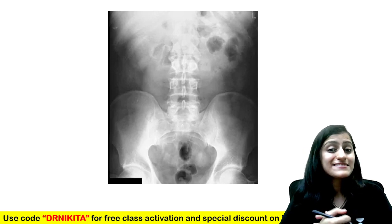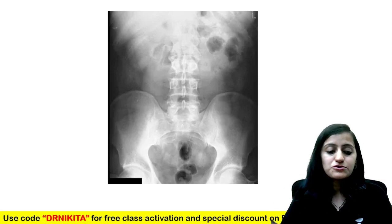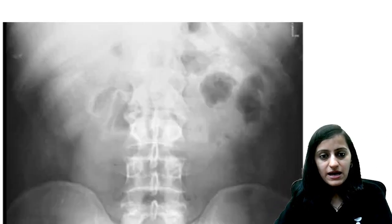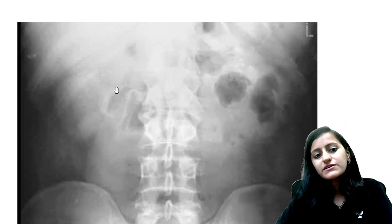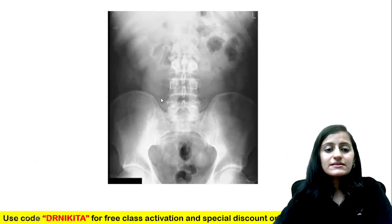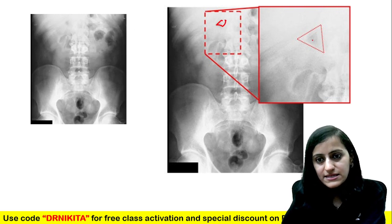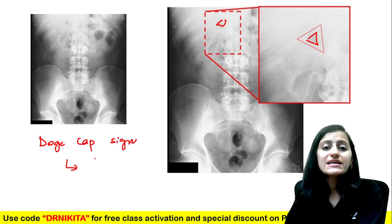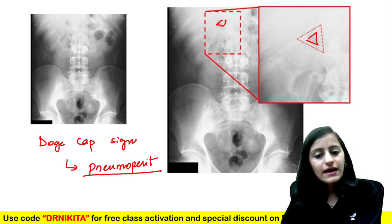The next image is a bit difficult but very important. Zooming in on the right side, there is a triangle-shaped collection of air between the liver and the kidney — in Morrison's pouch. This air in Morrison's pouch is called the doge cap sign, which is basically free air in the peritoneum — this is pneumoperitoneum. This is a very, very important sign to identify.